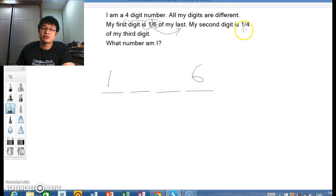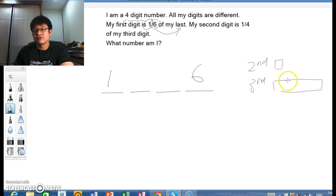Now, my second digit is one-quarter of my third. It's the same here. So let's draw a model for second and third. Second is one unit, third is four units.